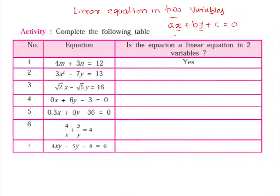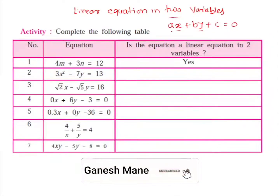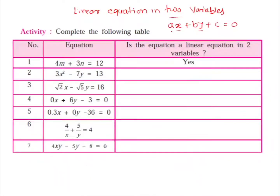There is one condition: a and b must not both be equal to 0 at the same time. If either a is equal to 0 or b is equal to 0, that's okay in certain linear equations. But both cannot be zero simultaneously, because if they were, both the terms ax and by would become 0 and we'd get only a constant term — an equation where no variable is involved.